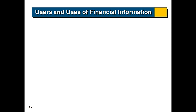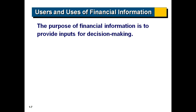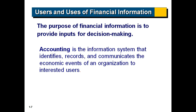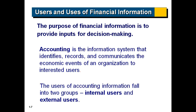Let's look at the users and uses of financial information. Basically, the purpose of financial information is to provide input for decision making, as we saw earlier. Investors and creditors are the two primary external users of the financial statements, and they rely on that financial information for making their lending and investing decisions. Accounting is actually an information system that identifies, records, and communicates the economic events of an organization to those that are interested. The users of accounting information fall into two primary groups: internal and external.